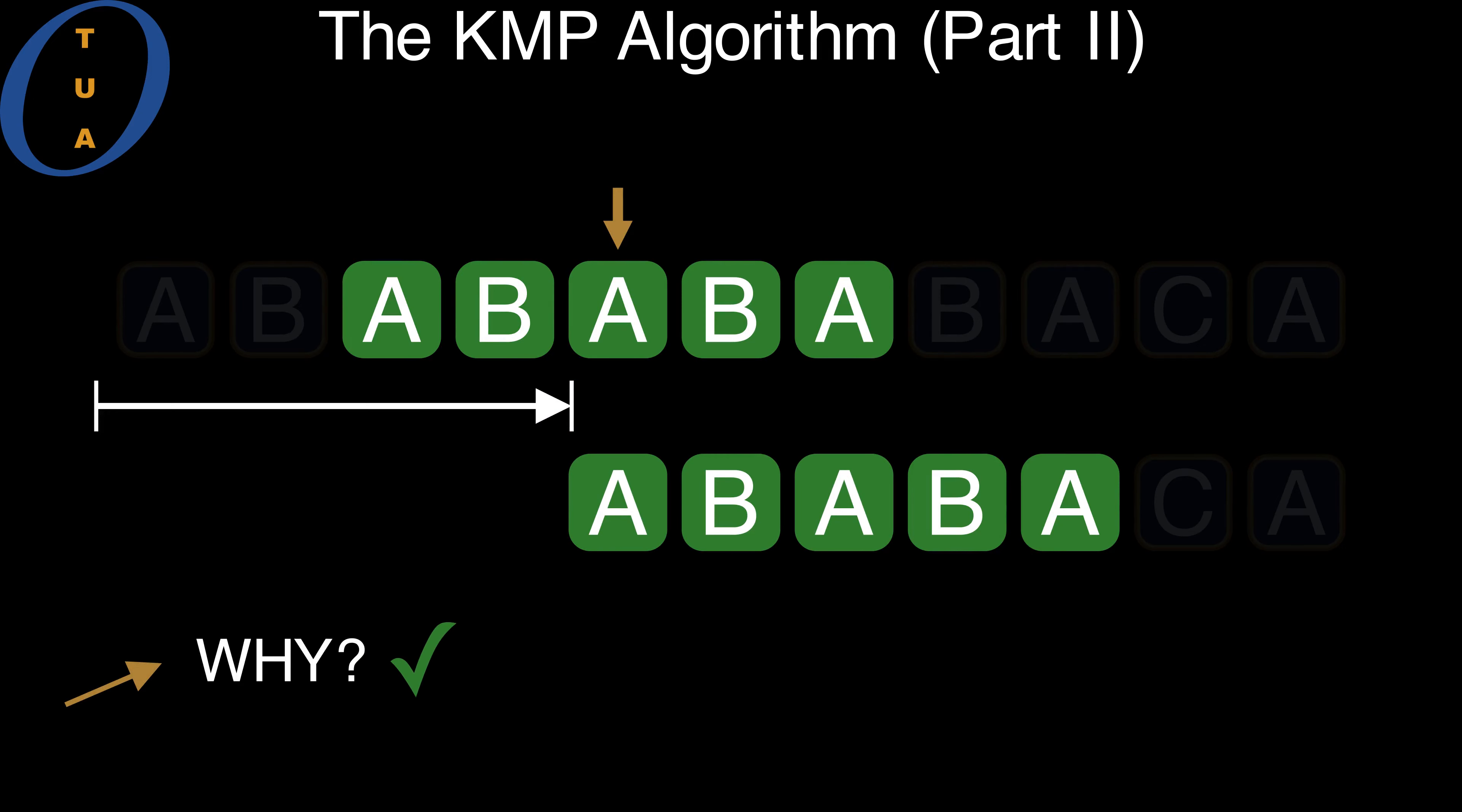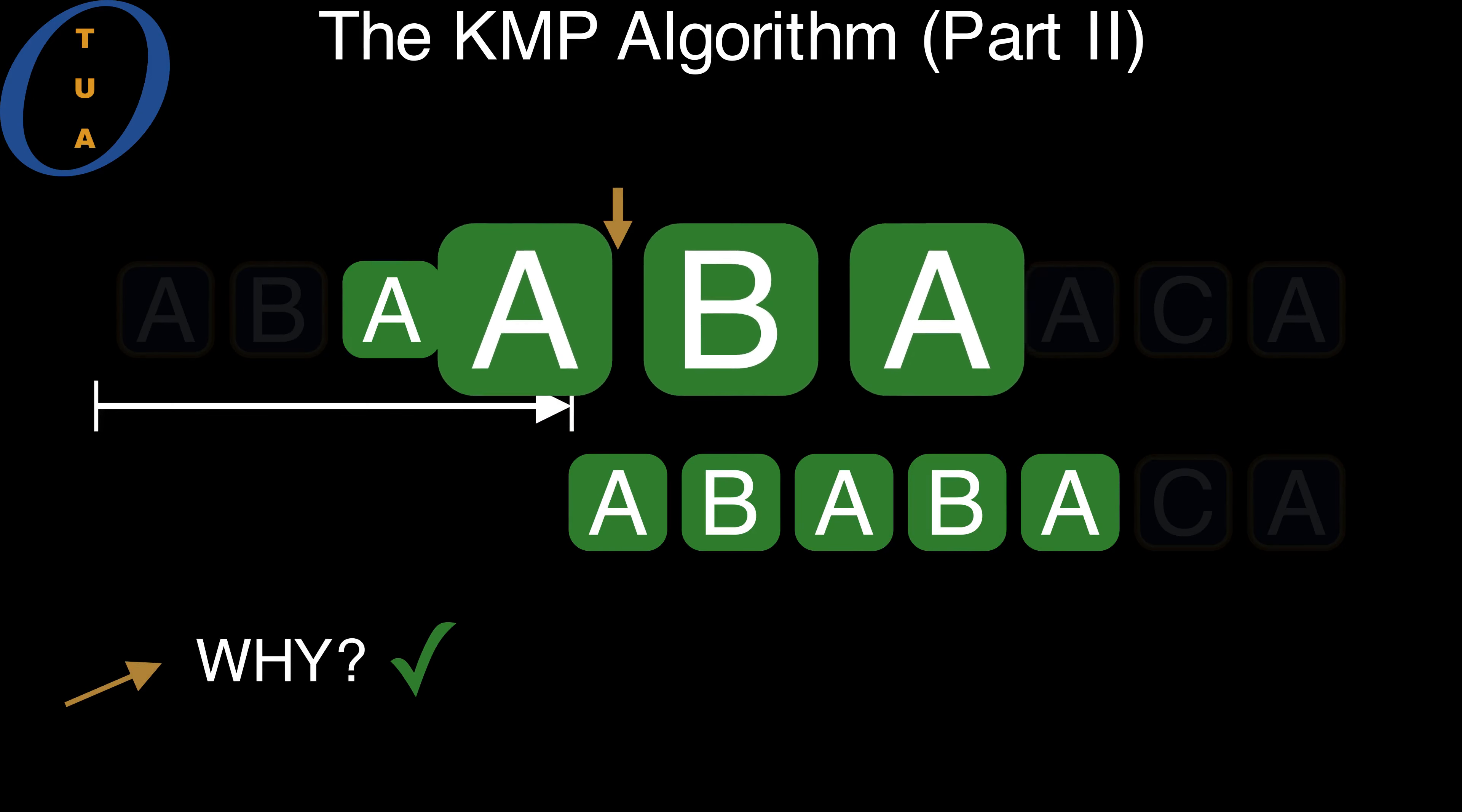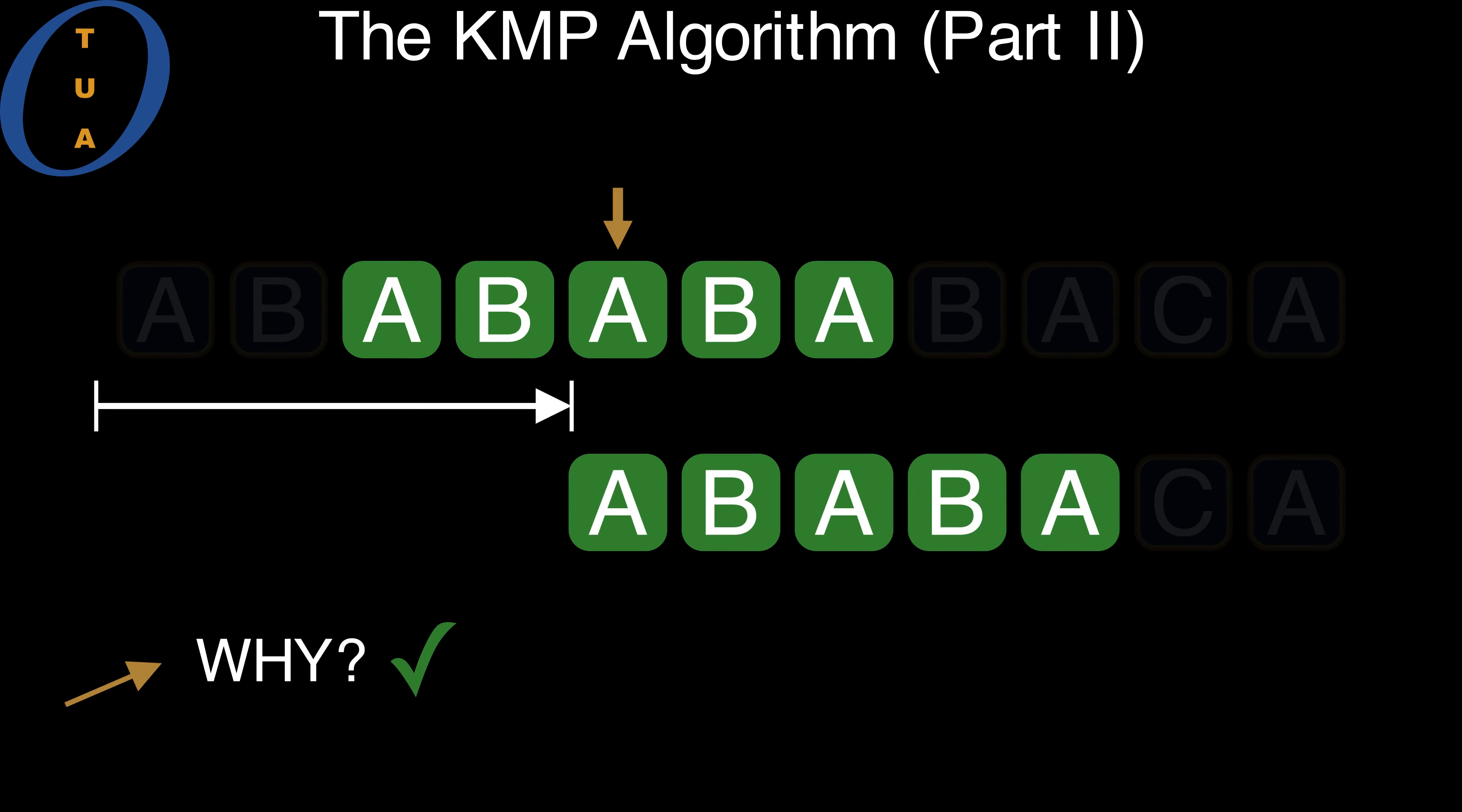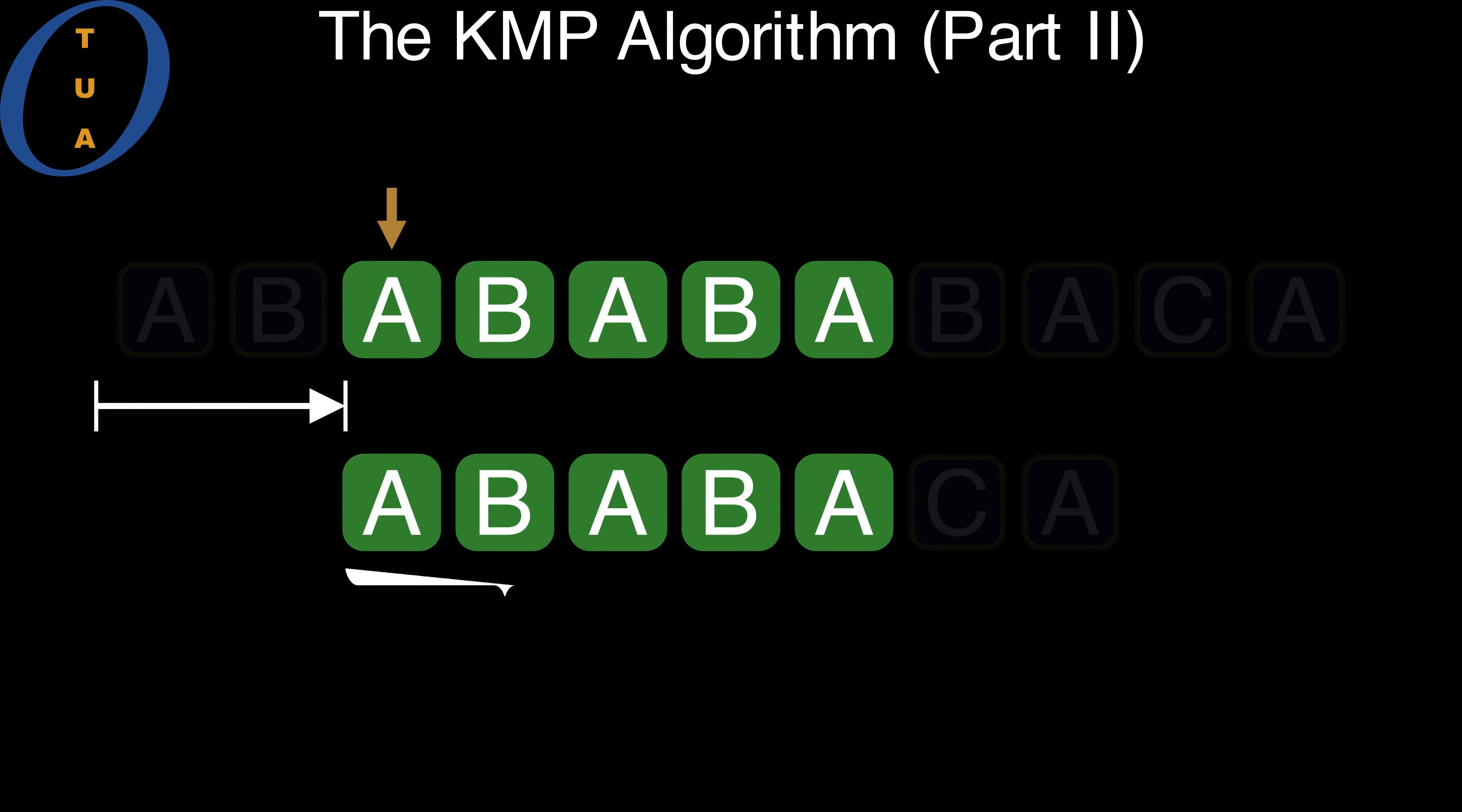This answers the first question. We shift the pattern to the right, so that the largest proper border is aligned. On to the second question, how do we quickly compute the new offset? Assume for a second that we know the longest proper border of the current overlap. Call its length L.